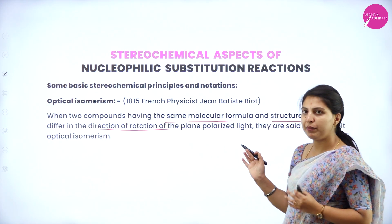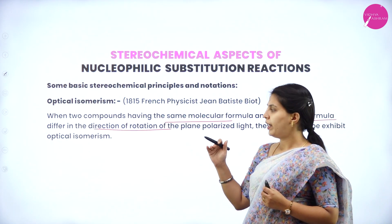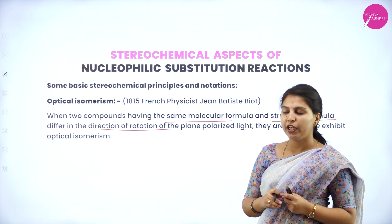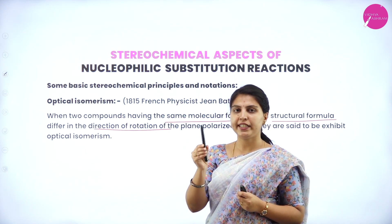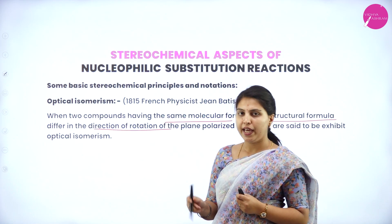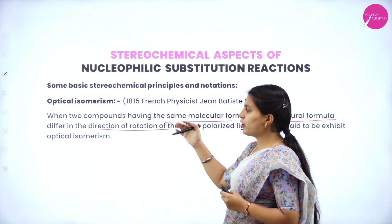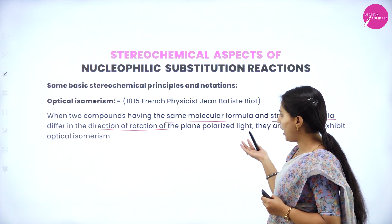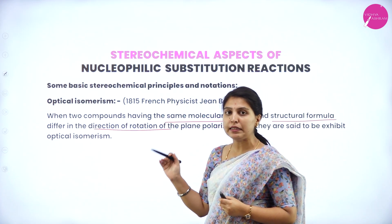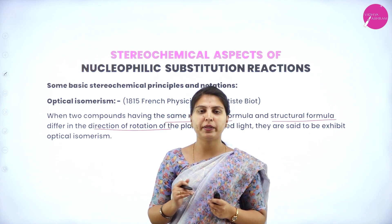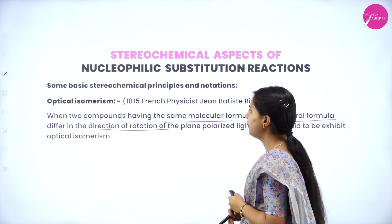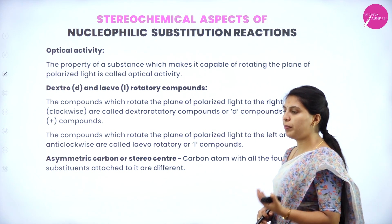But the structural formula will be different because of the direction of rotation of the plane polarized light. If the molecule can rotate from right to left or left to right, the direction of rotation can be different. It will have a different structural formula but the same molecular formula. This kind of compound is called an optical isomer.